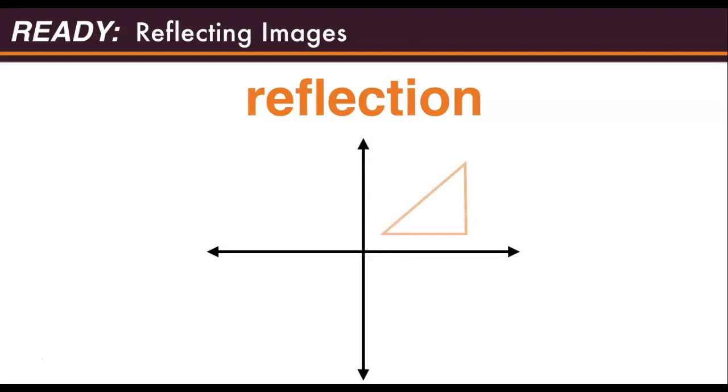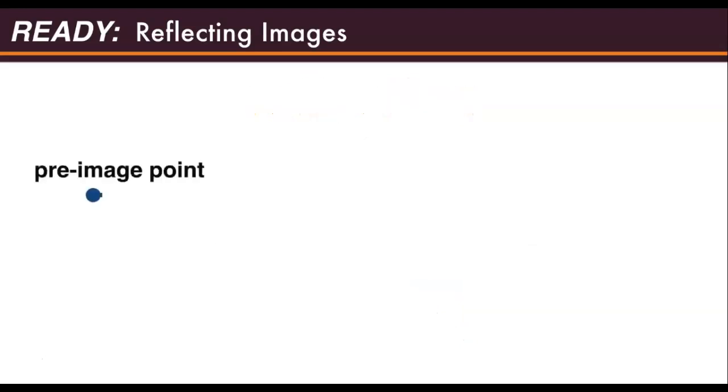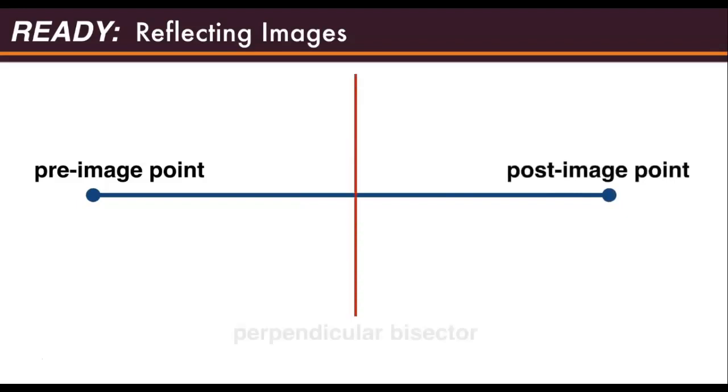In other words, even though the pre-image and post-image are in different positions on the coordinate plane, they are the same shape and size. A reflection moves points across a line of reflection in a very specific way. When you connect a pre-image point with its corresponding post-image point, the line of reflection is the perpendicular bisector of that connecting line segment.